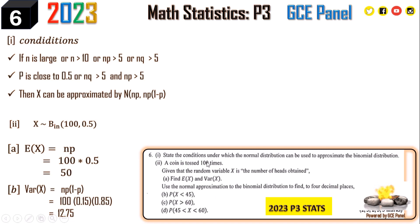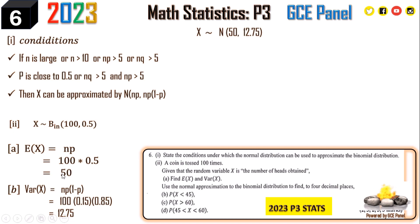Now we use the normal approximation to this binomial distribution. We transform so that X follows a normal distribution with parameters mu = 50 and variance = 12.75. This approximation is valid because np = 50, which is greater than 5.